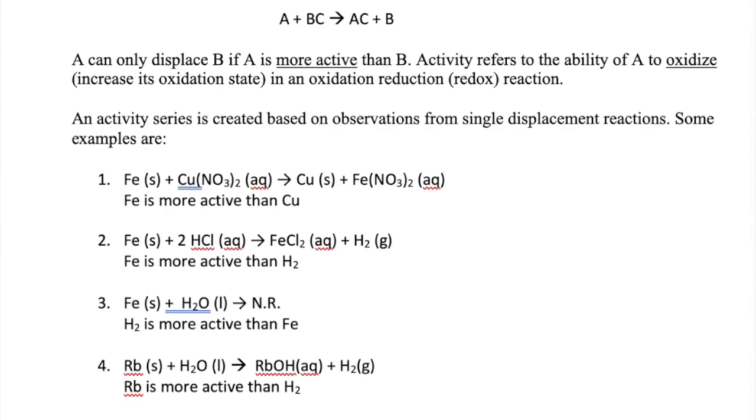Let's talk a little bit more about single displacement reaction and a concept called activity series. So the element A in a single displacement reaction can only replace or displace the cation B+ in this ionic compound if A is more active than element B. The word activity here refers to the relative ability of A versus B to oxidize, which means to increase its oxidation state. If A is more easily oxidized than B, then A is more active than B. To create an activity series, you can use your observations from several single displacement reactions.